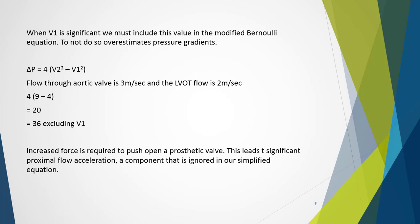Another example is blood leaving the heart into the aorta, where LVOT flow may be significant relative to flow through the aortic valve. With aortic flow of 3 m/s and LVOT flow of 2 m/s, there is basically a 45% error if V1 is not considered. Using the full formula: 4(V2²) − 4(V1²) = 4(9) − 4(4) = 20 mmHg, whereas using only 4V² gives 36 mmHg — a significant error.